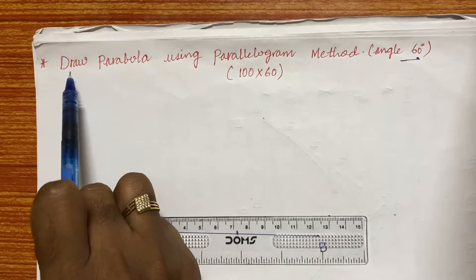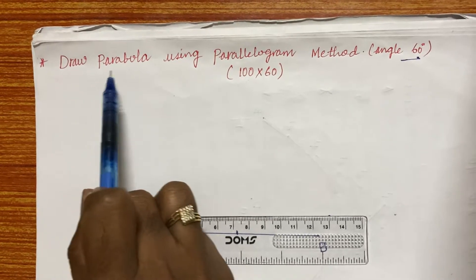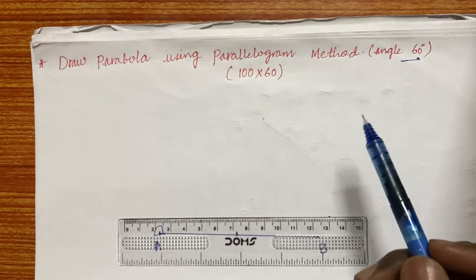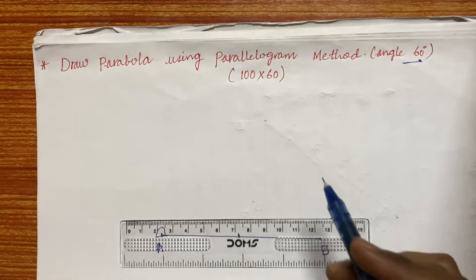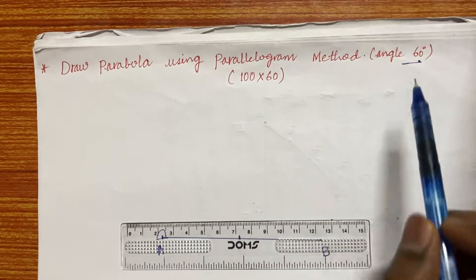In the question, sometimes they will be asking just like that trace parabola using parallelogram method. That's for a 10 mark or a 15 mark. What you are supposed to do is you need to assume this as well as this.